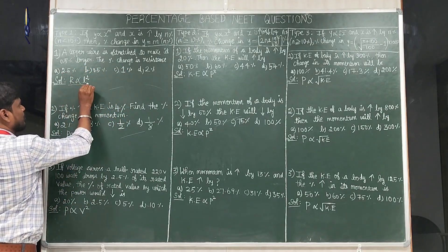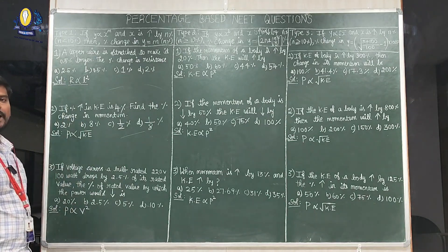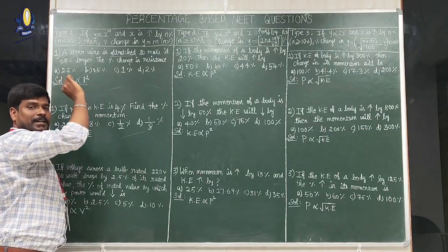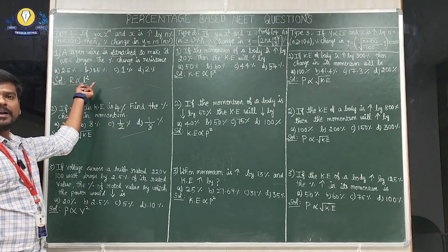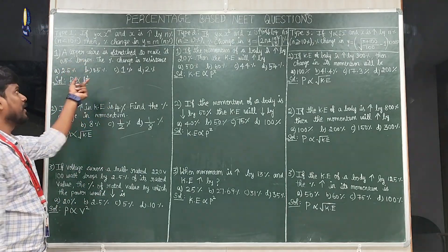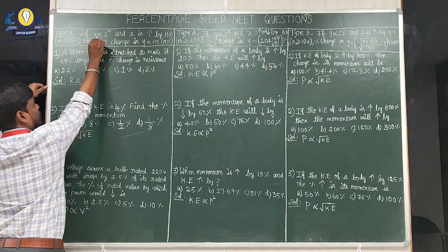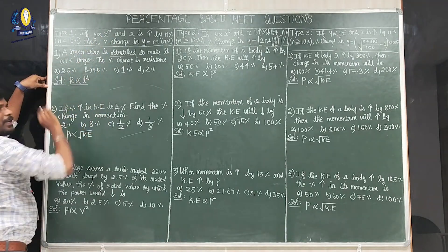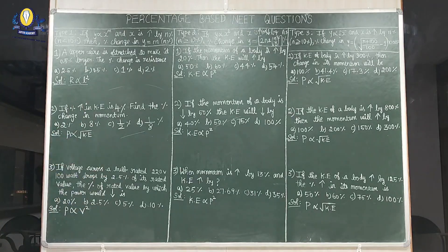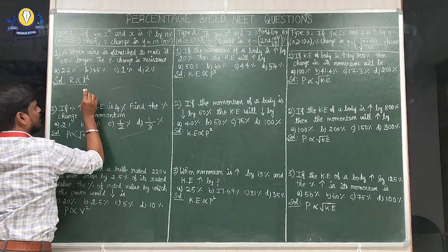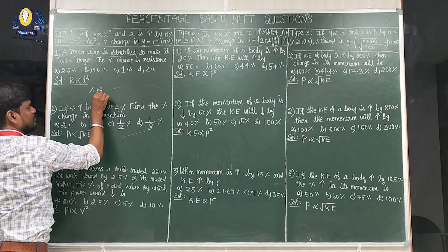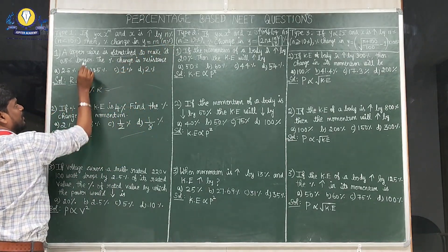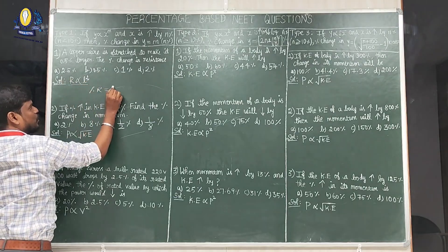We already know the formula: for the stretching case, resistance R is directly proportional to l². Now compare with the formula: if y is proportional to x to the power m, here y is R and x is L to the power 2. So using the formula, percentage change in R = m × n%. By comparison, m = 2.